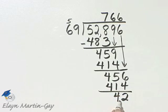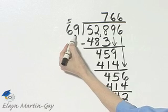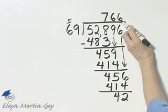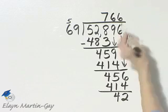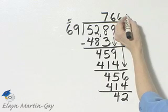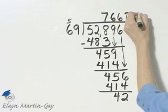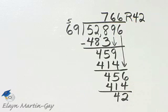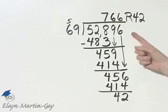Notice again this is less than this, so I know that I wouldn't have 7 here. I know 6 is indeed correct in this place. So it's 766 remainder 42. How do you check? Multiply 69 times 766 and add to that 42. You should get 52,896.